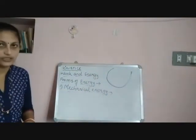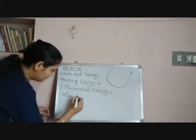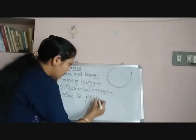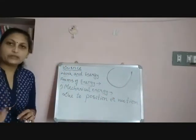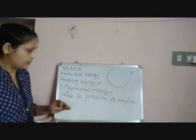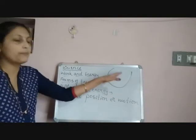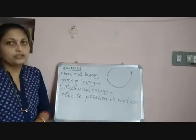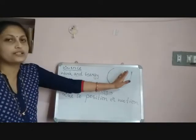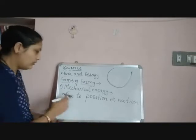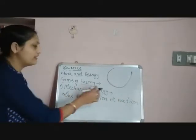This is the first form of energy. Objects possess mechanical energy due to their position or motion — motion means movement. When an object moves it possesses mechanical energy, or when an object is placed at a height it also possesses mechanical energy. For example, water stored in a dam, when allowed to fall from a height, has the ability to rotate turbines and produce electricity — hence the water stored in a dam has mechanical energy.